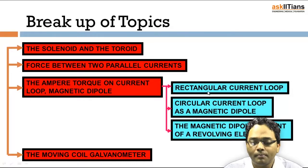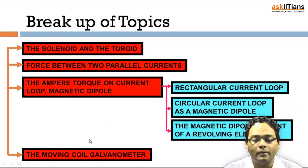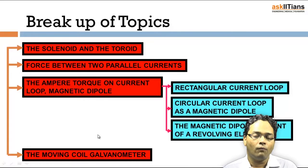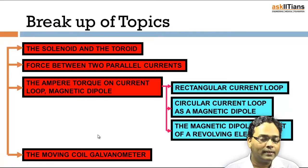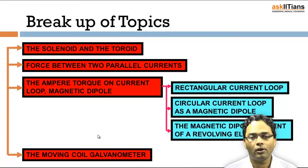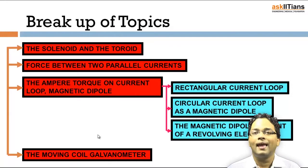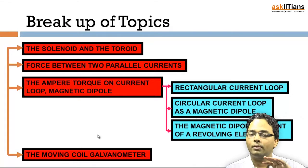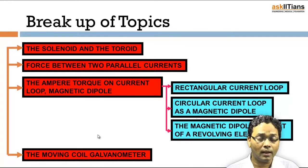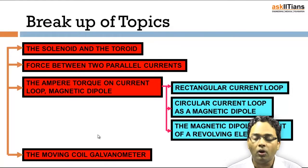Going further, we'll talk about the rectangular current loop and the circular current loop as a magnetic dipole. The magnetic dipole moment of a revolving electron — when an electron revolves about the center of the atom, the center is positively charged. So there is a positive center (the nucleus) and a negative center (the electron), resulting in a dipole. The total number of electrons equals the positive charge of the nucleus, and therefore that results in a magnetic dipole.